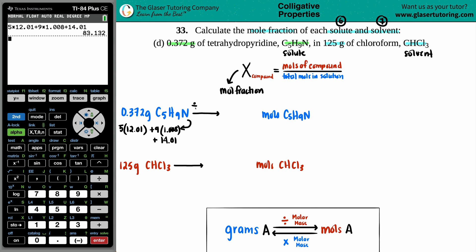So I'm going to divide the 0.372 by the 83.132. And I get roughly a small number, 0.004475. That's the total number of moles of the tetrahydropyridine. Now we have to do the same for chloroform.